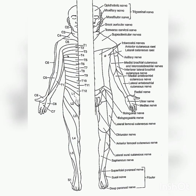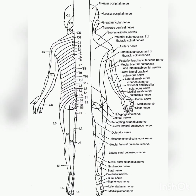Anterior view of skin segment innervation by dorsal roots depicted on the left side and peripheral nerves depicted on the right side. Posterior view of skin segment innervation by dorsal roots is depicted on the left side and peripheral nerves depicted on the right side.